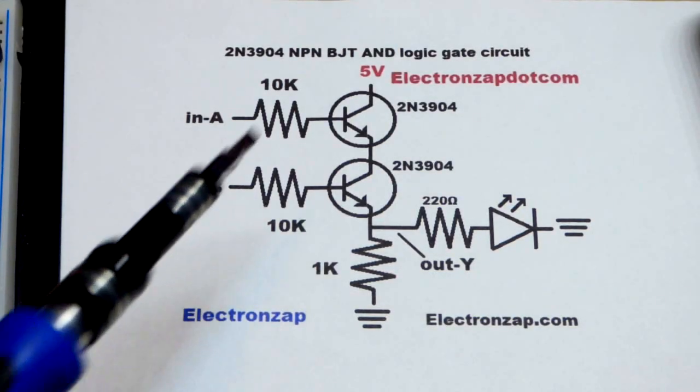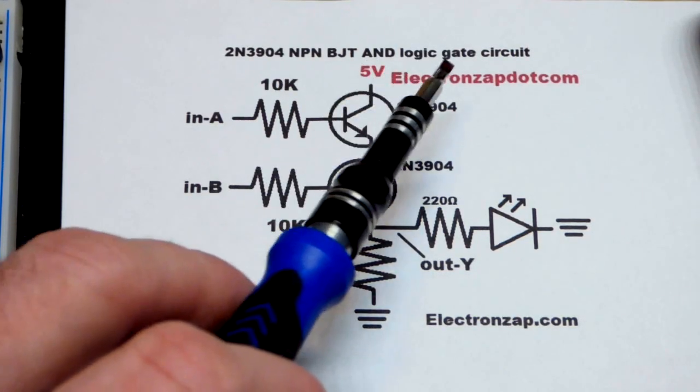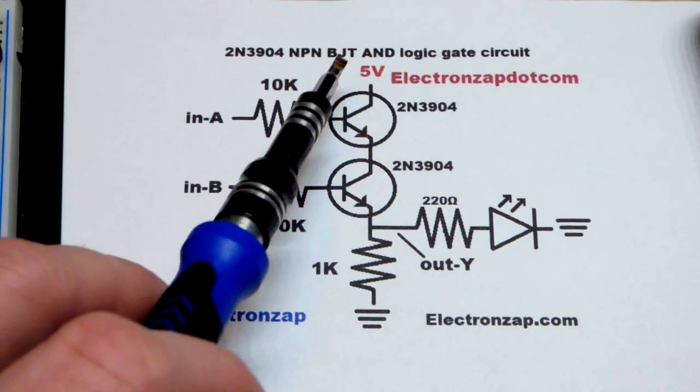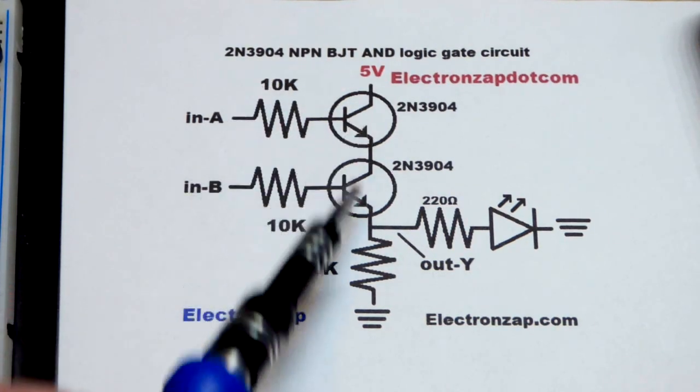So now in this video, we're going to build an AND logic gate using an NPN bipolar junction transistor. Two of them, actually.